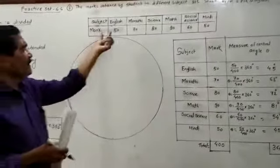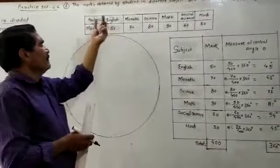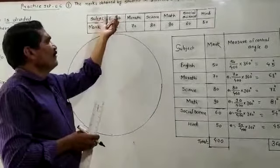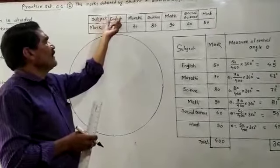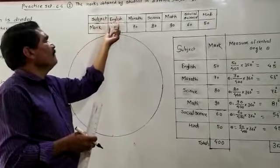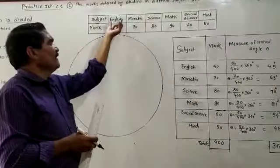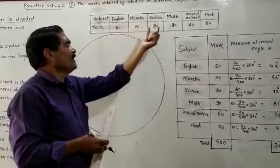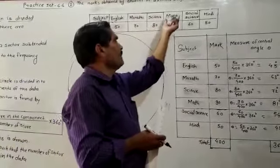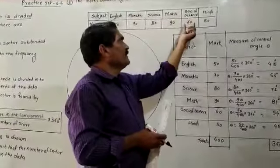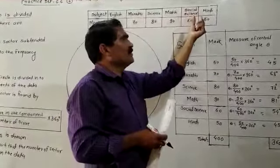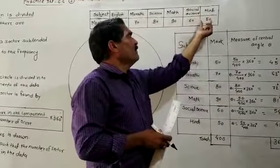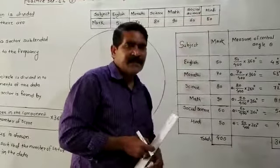The data is like this: that particular student is getting 50 marks in English, 70 marks in Marathi, 80 marks in Science, 90 marks in Maths, 60 marks in Social Studies, and 50 marks in Hindi.